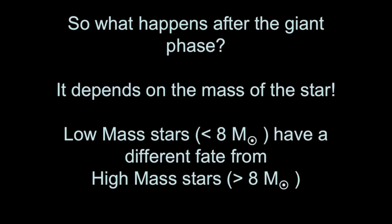We're following up on the transition from main sequence to red giants in stellar evolution. In this video we'll describe what happens to low mass stars after the red giant stage. Low mass stars are defined as stars that begin their lives with less than eight solar masses. High mass stars begin their lives with more than eight solar masses and suffer a different fate.